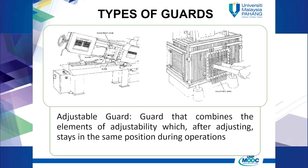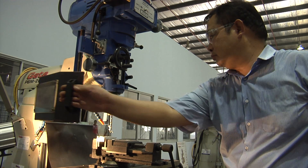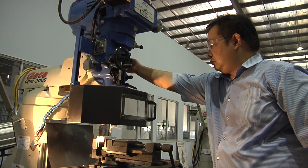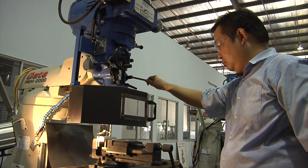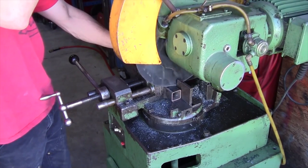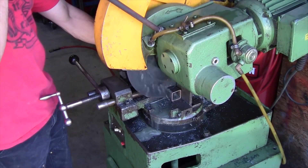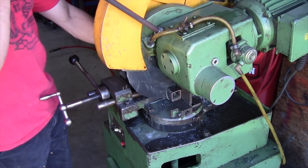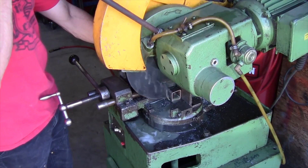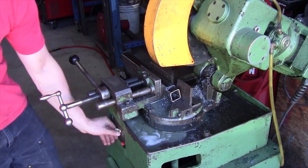Number three: adjustable guard — a guard that combines the elements of adjustability, which after adjusting stays in the same position during operations. Number four: self-adjusting guard — the opening of this guard is determined by movements of work material. It prevents entry of persons into the hazardous area but allows entry of work materials. The guard will return to its original position when operations are stopped.